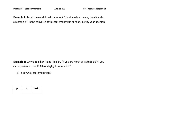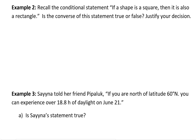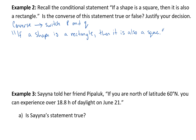Let's take a look at example two. It says: recall the conditional statement — if a shape is a square, then it is also a rectangle. Is the converse of the statement true or false? Justify your decision. The converse means that we switch P and Q. So now it would say: if a shape is a rectangle, then it is also a square. You can see where my hypothesis was before — 'it is also a rectangle' — is now first, and 'if a shape is a square' is the second part. We've switched those around.